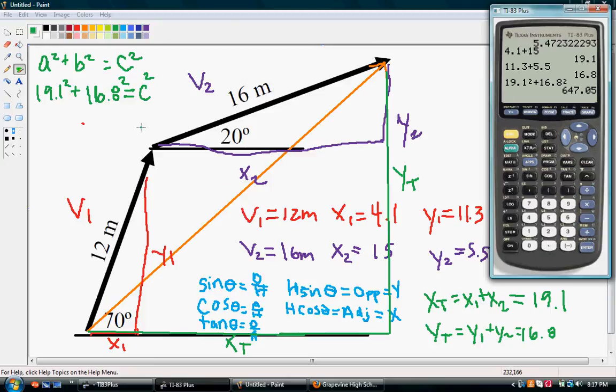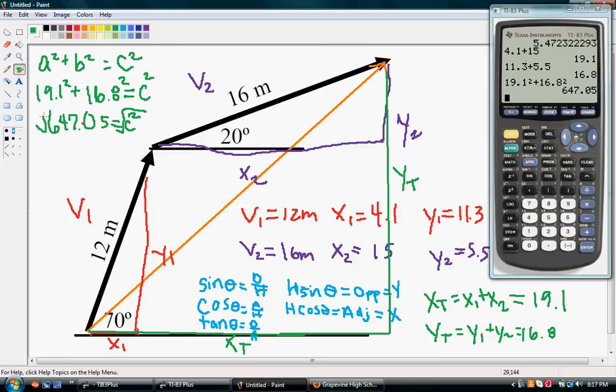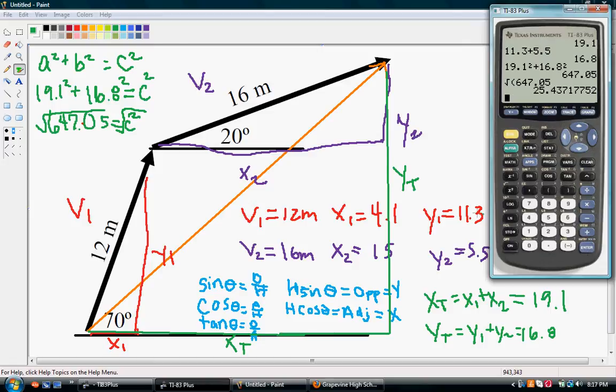So, I'm going to go over here and write that 647.05 is our c squared. Well, in order to find c, we have to take the square root of both of these things. So, we'll go ahead and take the square root of 647.05 and we get 25.4. So, our c, our resulting vector, equals 25.4 meters.